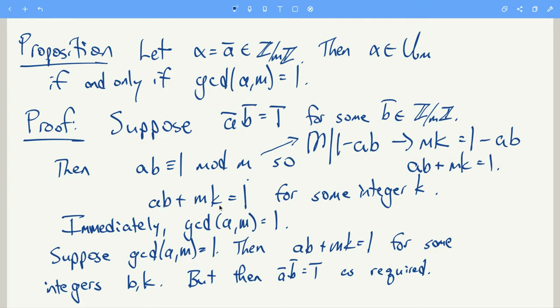And similarly, if ab plus mk equals 1 for some k, well, then m divides 1 minus ab, so ab is congruent to 1 mod m.